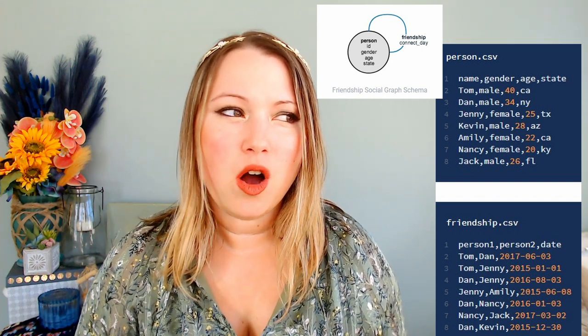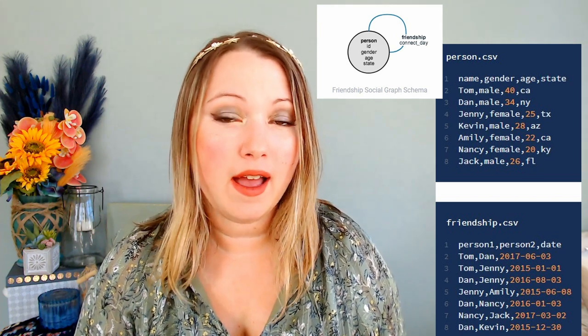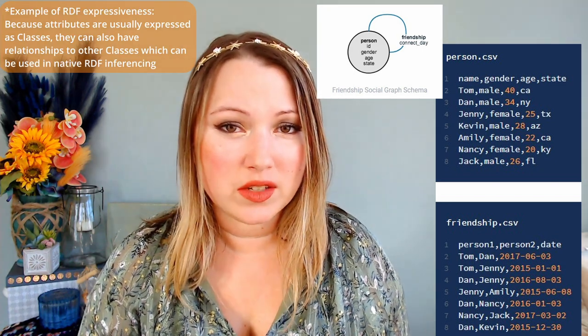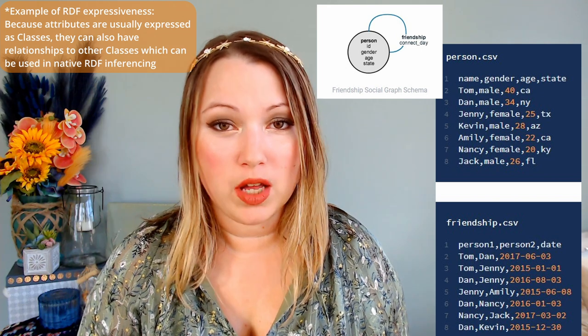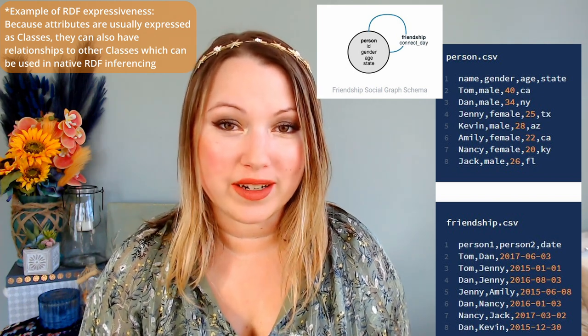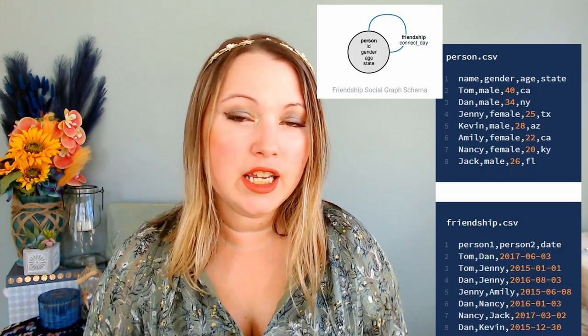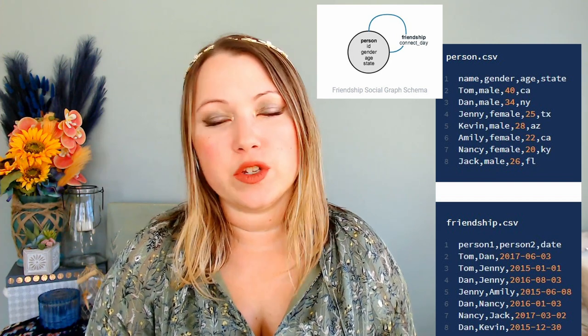In a property graph, this data has one very simple relationship between the nodes: friendship connection date. That's all you need for a property graph. However, when you go to RDF, you have to define a little bit more about all the different attributes a node might have. RDF has a lot more expressiveness associated with its models and, more importantly, the way that it is queried. The types of queries you can do with graph data make the relationships inherent, whereas in a regular relational database you'd have to join a few different tables to get the same information.